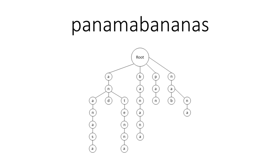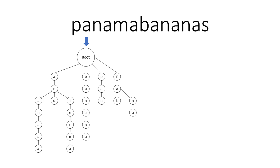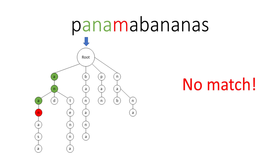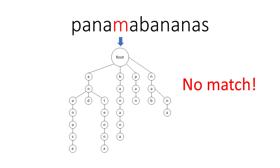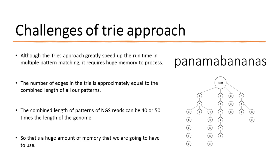To use the trie for pattern matching, assume the genome is 'panamabananas.' We place the trie at the first position of the string 'p' and ask whether any pattern can match at that position. We find a 'p' nearest to the root, so there is a match. We walk down through 'a' and 'n,' and at this position we find a match for 'pan.' We then move the trie to the next position and walk down from root to leaf. We find 'a,' then 'n,' then 'a,' but there is no 'm' in our tree, so it doesn't match. The trie data structure allows us to retrieve a pattern from the collection very quickly.